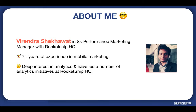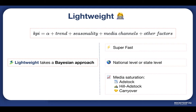Google Lightweight, like any other MMM, quantifies the relationship between media channel activity and sales while controlling for other factors. A simplified model overview shows: KPI is typically the volume or value of sales per time period; alpha is the model intercept; trend is a flexible non-linear function capturing trends; seasonality is a function with configurable parameters capturing seasonal trends; media channels show different channel activity such as impressions or cost per time period; and other factors include metrics like promotions or external variables.